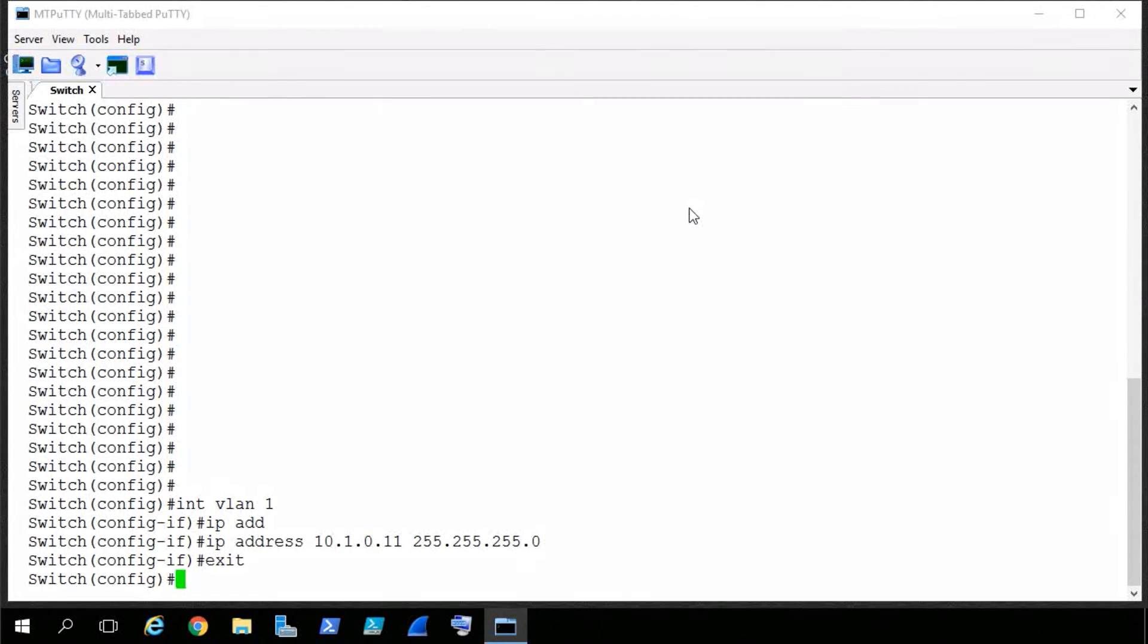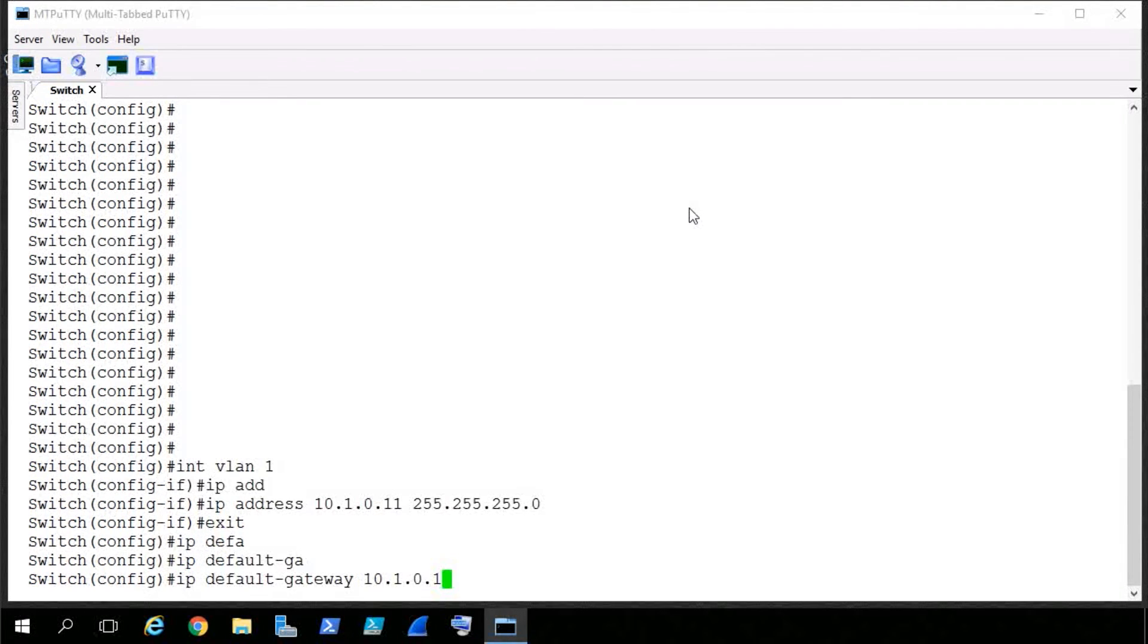Now the other challenge is if we happen to be remotely connecting to this switch from a different network, the switch is also going to need a default gateway it can use to send reply packets back to the administrator. So to configure a default gateway, we'll use the command IP space default-gateway. And then the default gateway's IP address, which is 10.1.0.1.